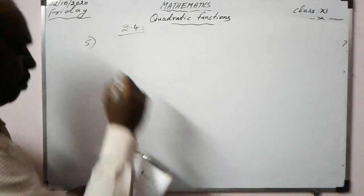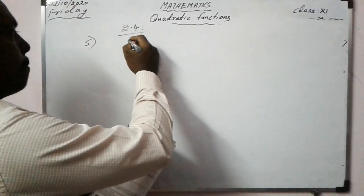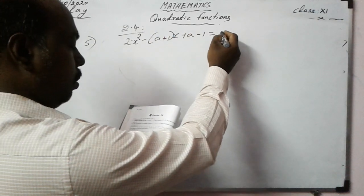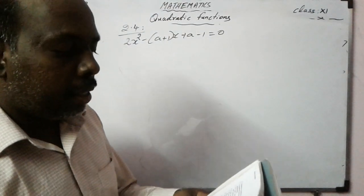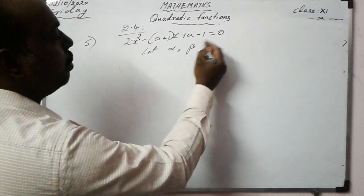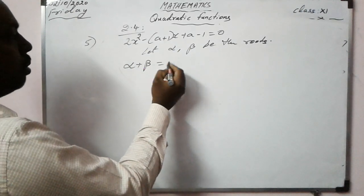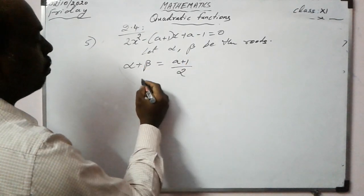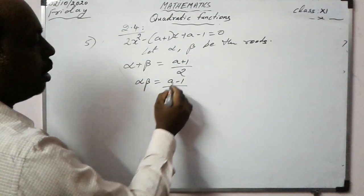Fifth question: If the difference of the roots of x² - (a+1)x + (a-1) = 0 equals their product, prove that a = 2. Let alpha and beta be the roots. Sum: alpha+beta = (a+1)/1 = a+1. Product: alpha·beta = (a-1)/1 = a-1.